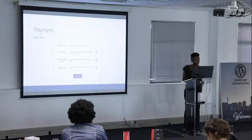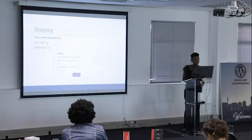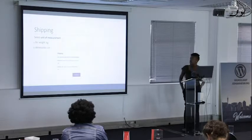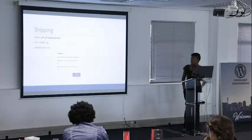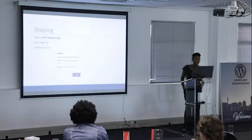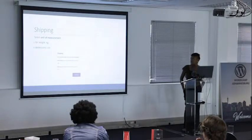For offline payments I selected nothing — I don't want to enable check payments, bank transfers, or cash on delivery. The next screen is about shipping. I have to decide how my items are weighed and measured. For weights I'll say kilograms, and for dimensions I'm going to measure them in centimeters, not inches.